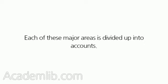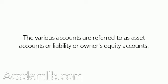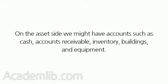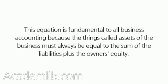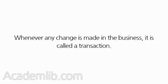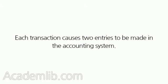Each of these major areas is divided up into accounts. The various accounts are referred to as asset accounts, liability accounts, or owner's equity accounts. On the asset side we might have accounts such as cash, accounts receivable, inventory, buildings, and equipment. On the liability side we might have accounts such as accounts payable and long-term loans payable. This equation is fundamental to all business accounting because assets must always be equal to the sum of liabilities plus owner's equity. Whenever any change is made in the business, it is called a transaction, and each transaction causes two entries to be made in the accounting system.